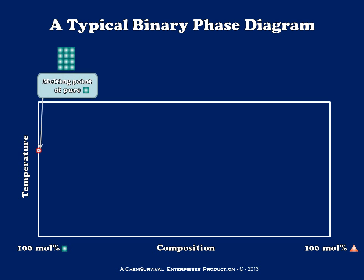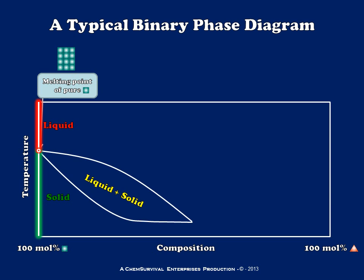If I start over here at 100 mole percent squares, I expect that material when it's pure to have a certain melting point — a single distinct temperature. Below that temperature I have a solid, and above it I always expect to have a liquid. But as I begin to add a little bit of the other compound, I notice that the phase boundary begins to go down in temperature — in other words, it takes less energy to melt a solid which is impure.